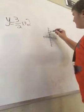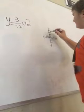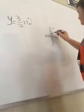Then you go 1, 2, 3 and then 1, 2. And if you want to make a full line, you can go down 3 and then over 2.